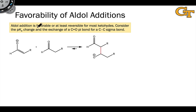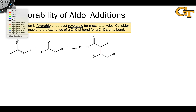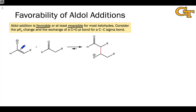For most simple aldehydes and ketones, aldol addition is either outright thermodynamically favorable or at least reversible, meaning close to thermoneutral. To understand this, we can start by thinking about the difference in pKa between the conjugate acids of the anions on each side: an enolate and an alkoxide. The conjugate acid of an enolate is the neutral carbonyl compound, and the pKa for an aldehyde or ketone is roughly 16 to 20 — let's put it at 18 on average.